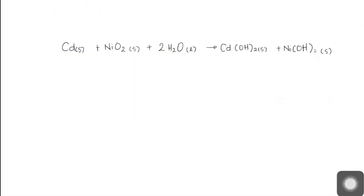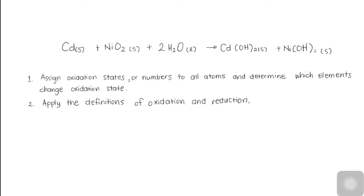Now we have an example of a balanced redox reaction showing a nickel-cadmium battery that uses the principle of redox reaction to generate electricity. Let us try to identify which substances are being oxidized and reduced, and which is the oxidizing agent and which is the reducing agent. To do that, we must first assign oxidation states to all atoms, determine which elements change oxidation states, and then apply the definitions of oxidation and reduction.